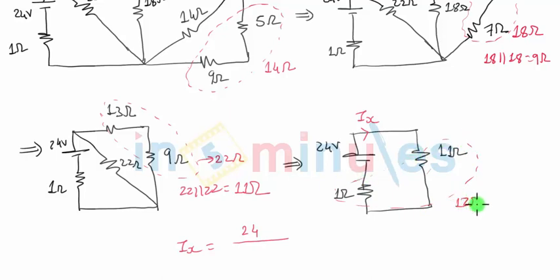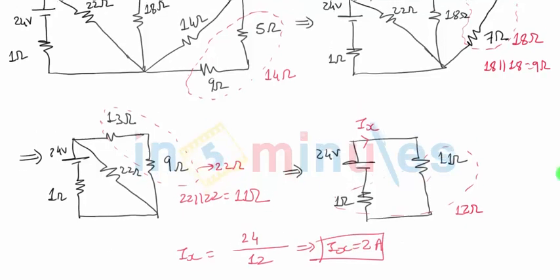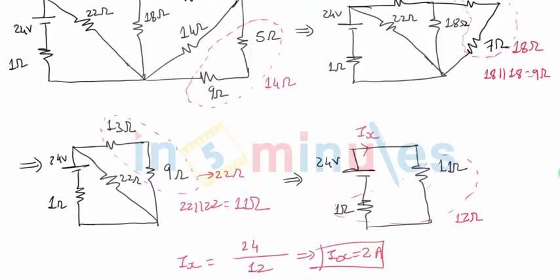In series the total resistance will be equal to 12 ohms. So 24 by 12 is the value for I and therefore I is nothing but 2 amperes. So it is 2 amperes which is supplied by the battery in this particular question. Thank you.